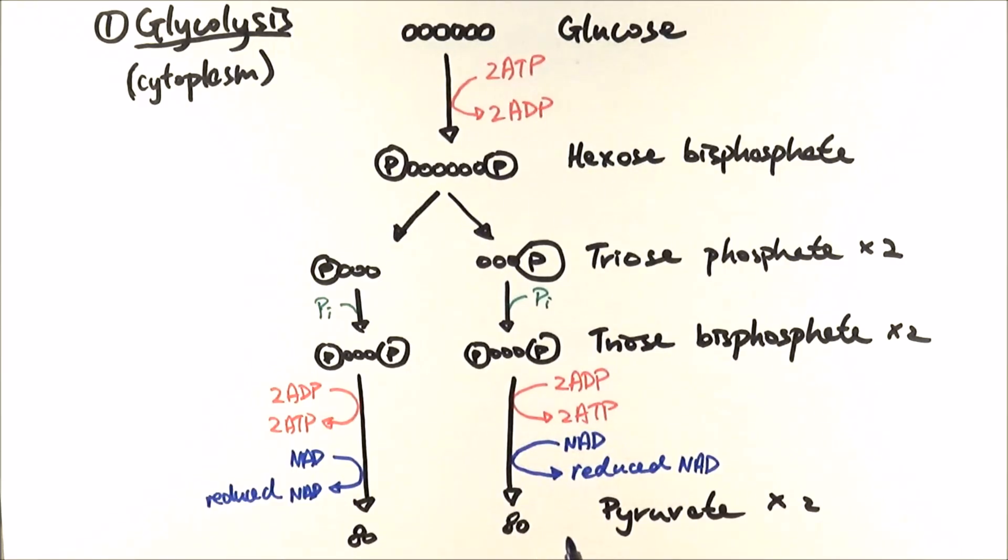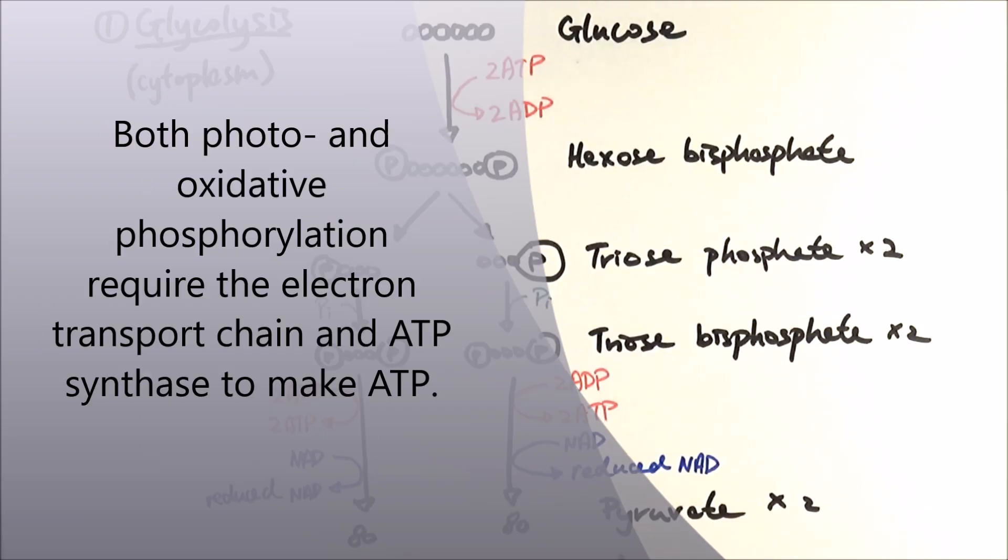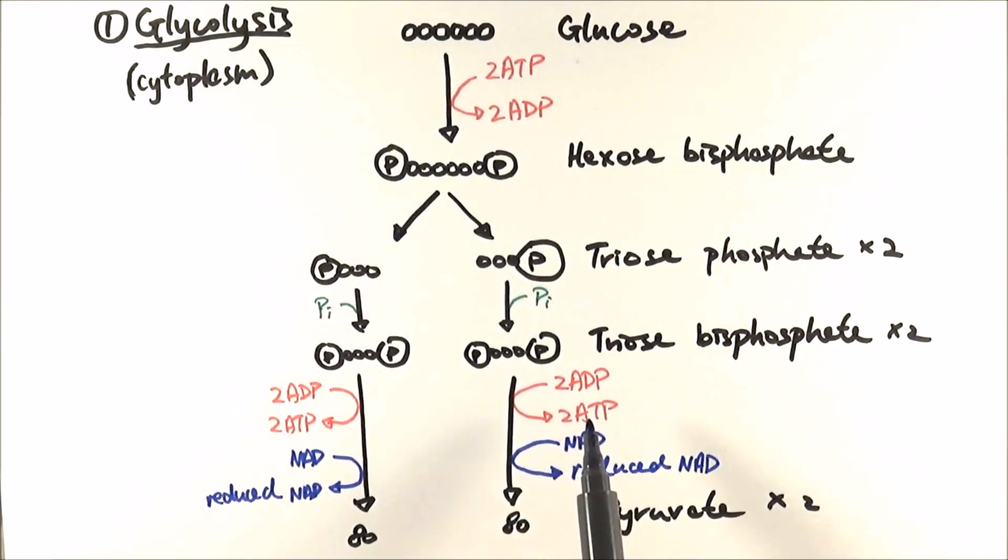Interestingly, for the other two—photo and oxidative phosphorylation—you need the electron transport chain and the ATP synthase enzyme to make ATP. However, in this case, ADP merely just took the phosphate group off from triose bisphosphate to make ATP.